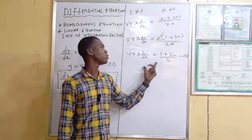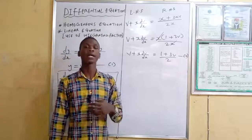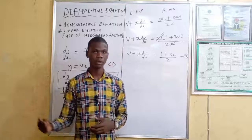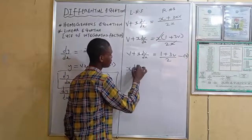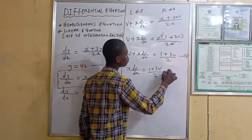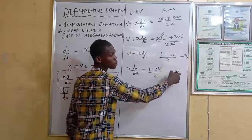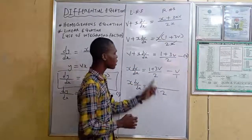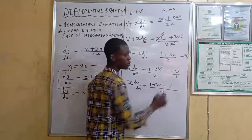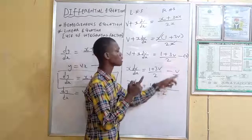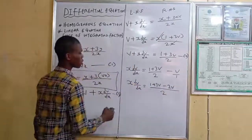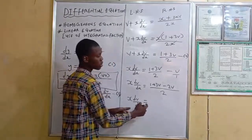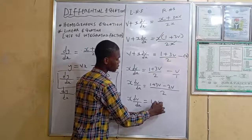Equation 4 can be related to the separable variable method because we can isolate the function of x from v. Moving v to the right-hand side: x·dv/dx equals (1 + 3v)/2 minus v. Combining terms in the numerator, 3v minus 2v gives plus v, so x·dv/dx equals (1 + v)/2.